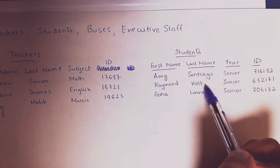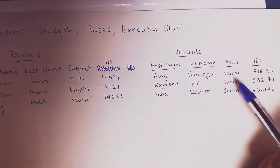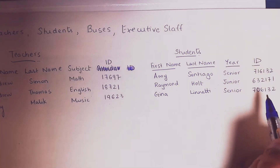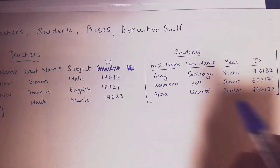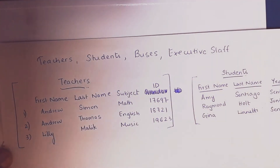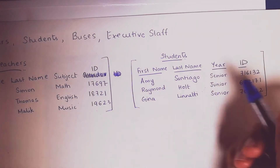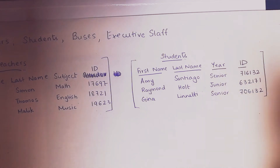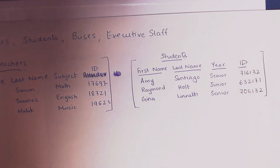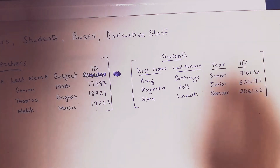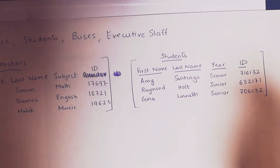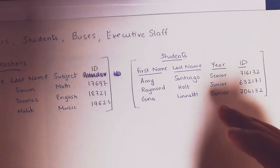In the students table, we have different characteristics: their first name and last name, which year/standing they are in, and also their unique identifier. What you need to know is that every table — this is a table for teachers as well — every table will have a unique identifier that helps us, as administrative assistants, differentiate among various students so we can avoid confusion. It's coherent and easy to understand what standing a student is in and what data is associated with each student.